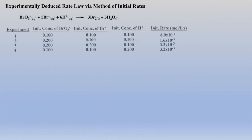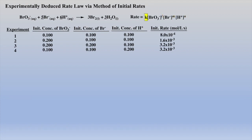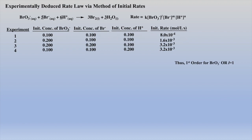In the next example, we have three reactants and data from four experiments. Our goal is to determine L, M, and N, as well as the rate constant, and we will accomplish this by the method of inspection. If the concentrations of the other reactants are constant and the concentration of bromide is doubled, we see that the rate doubles, which indicates first order with respect to bromide. Next, when the other concentrations are held constant and the concentration of the second reactant is doubled, we see that the rate also doubles, which means first order with respect to that reactant.